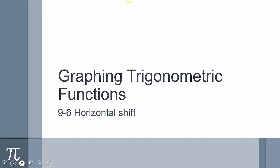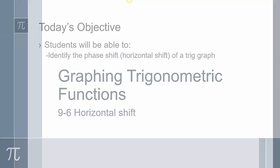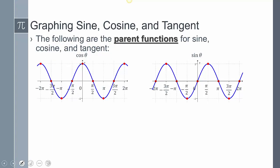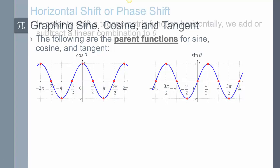Today we're in section 9-6, and we're going to take a look at the horizontal shift of trig functions. We're going to identify the phase shift, which is the fancy word we use for the horizontal shift of a trig graph. Remember these are our parent graphs — we have to have these memorized. There's our cosine and our sine parent graph. Cosine starts at the amplitude; sine starts at zero, or on the center line.